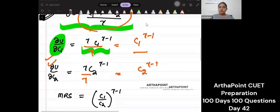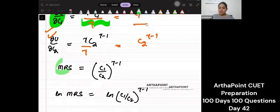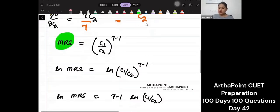Divide MUC1 by MUC2. So you will get MRS. Take log on both sides. So LN MRS will be LN this.